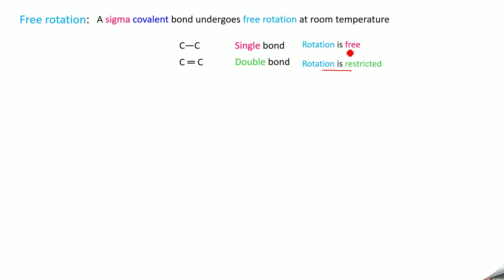Free rotation is also allowed in nitrogen-nitrogen single bonds, oxygen-oxygen single bonds, and nitrogen-oxygen single bonds. We can say the isomerism which arises due to free rotation of a carbon-carbon single bond is called conformational isomerism, and the isomers are called conformers.